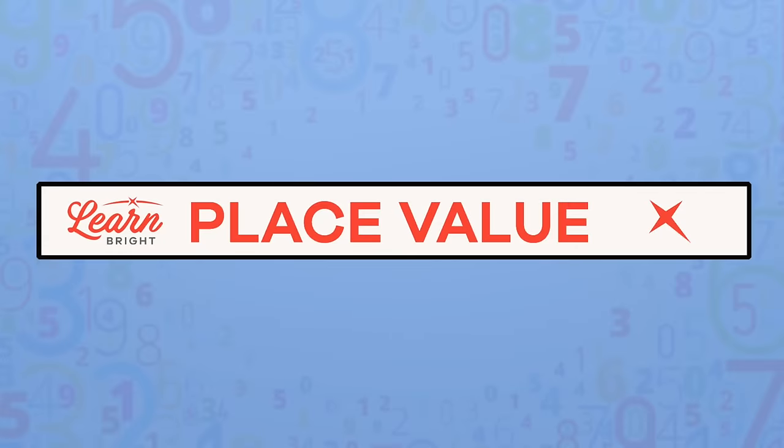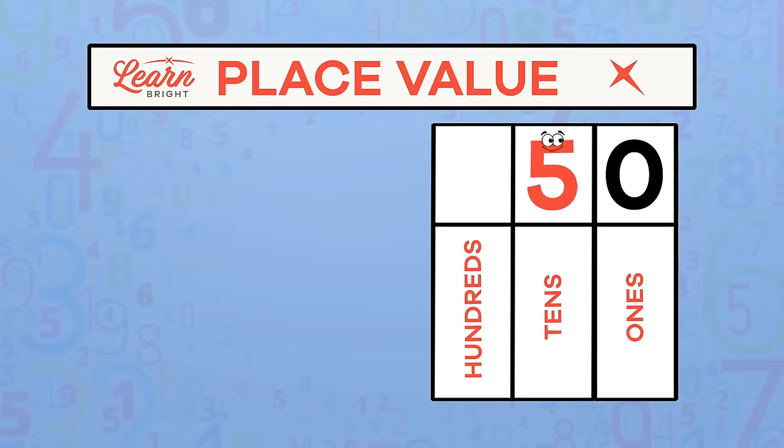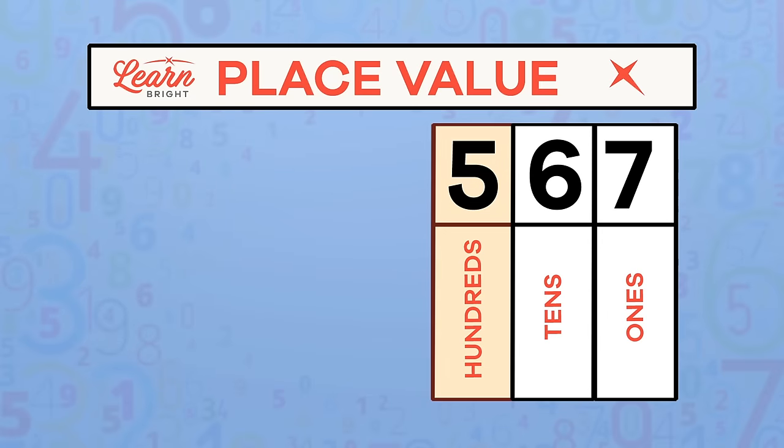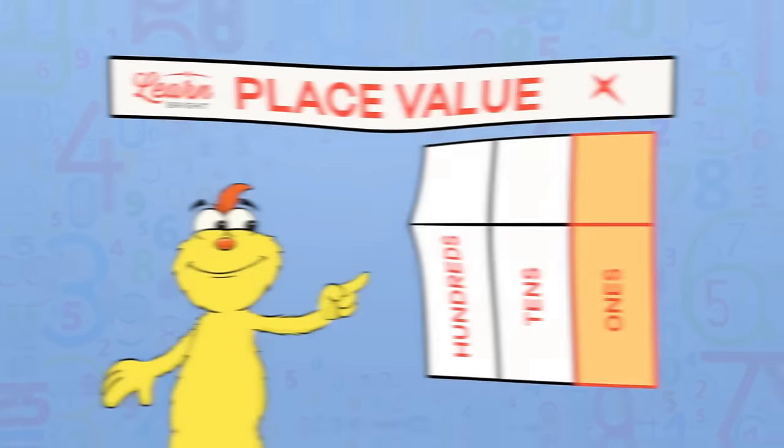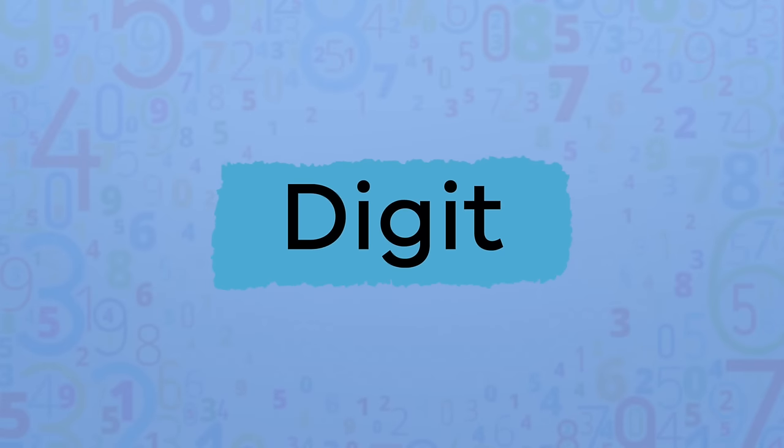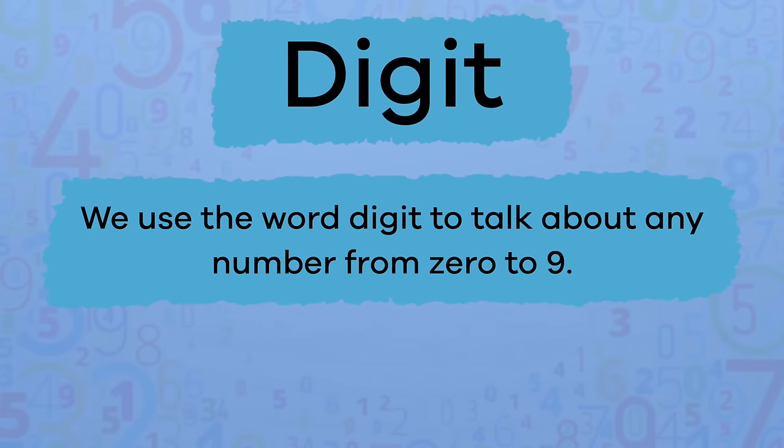Place value for kids. Today we will learn all about place value. We will do some activities together to help you become number reading champions. First, let's talk about the word digit. We use the word digit to talk about any number from 0 to 9.